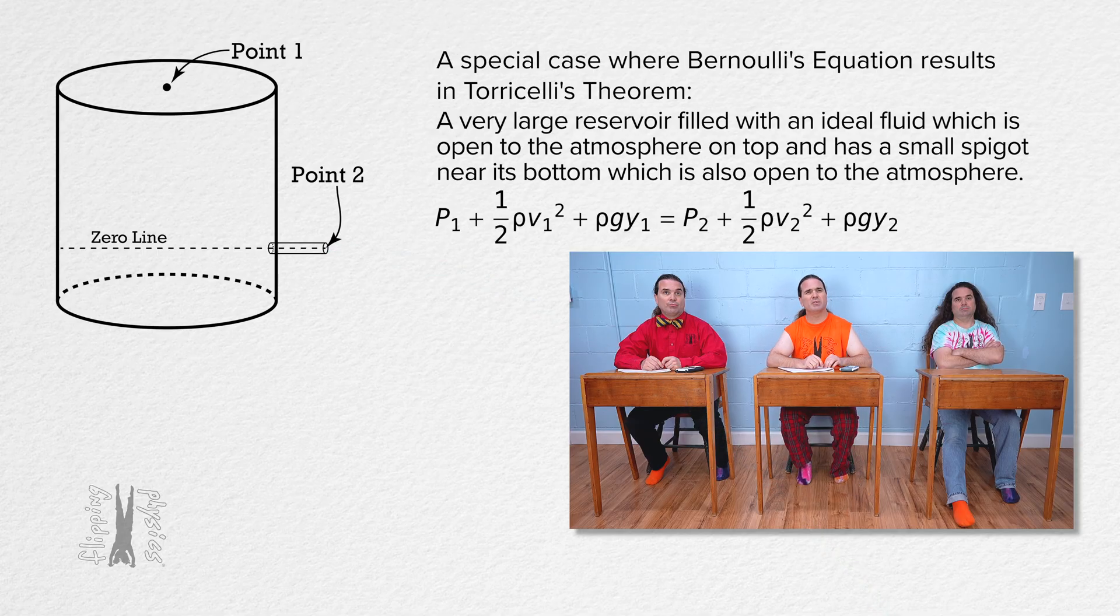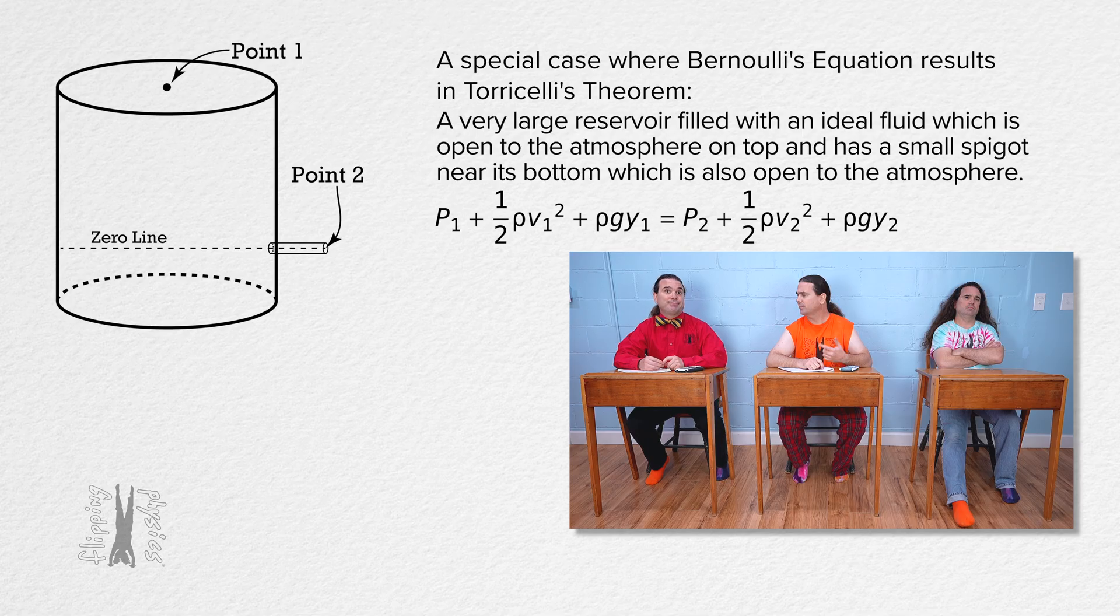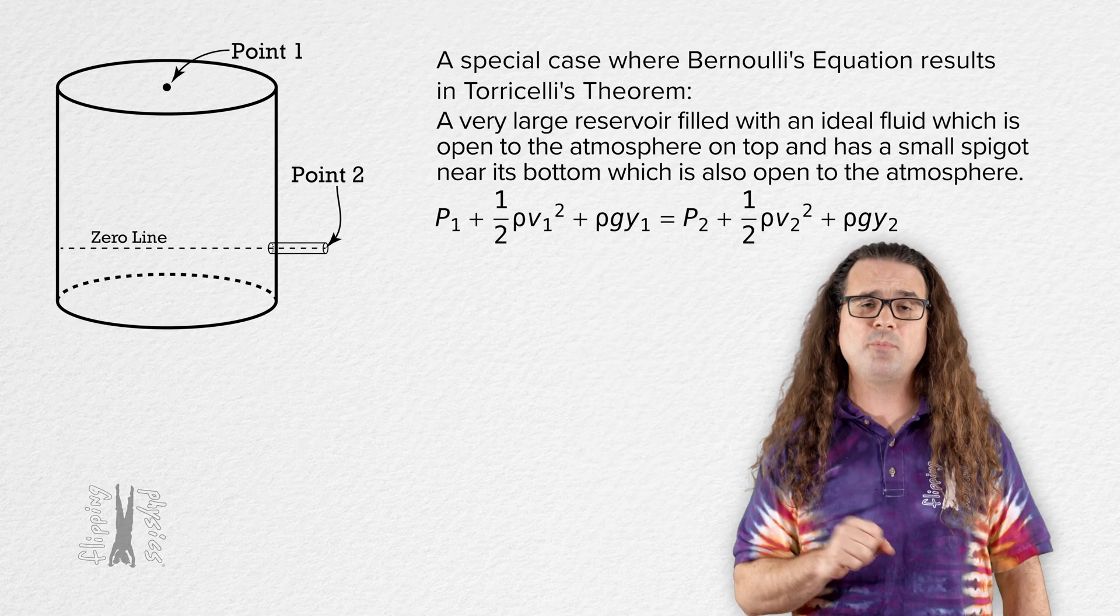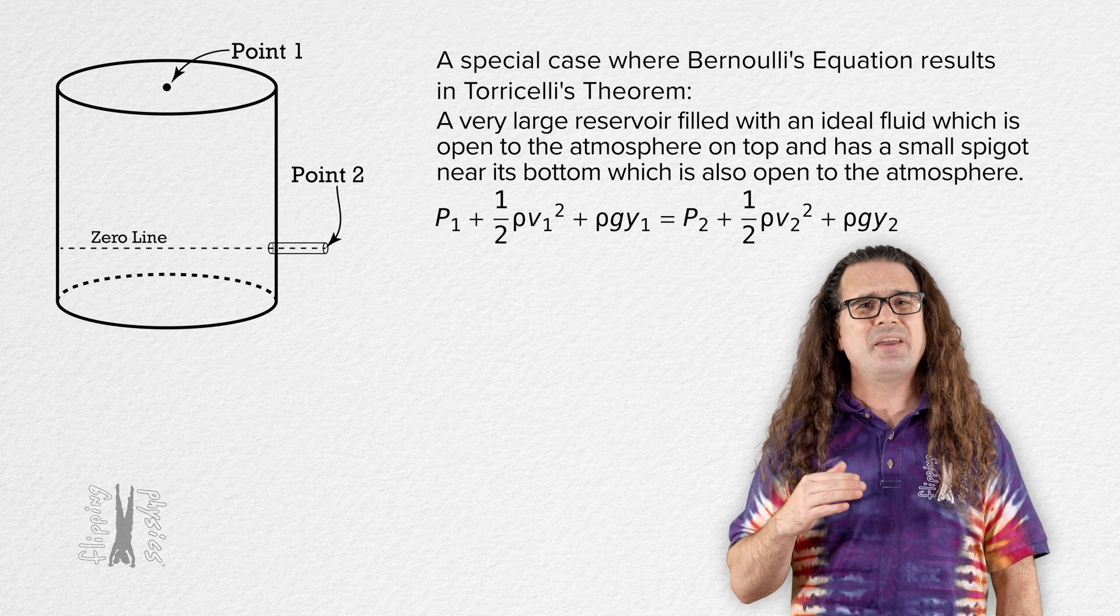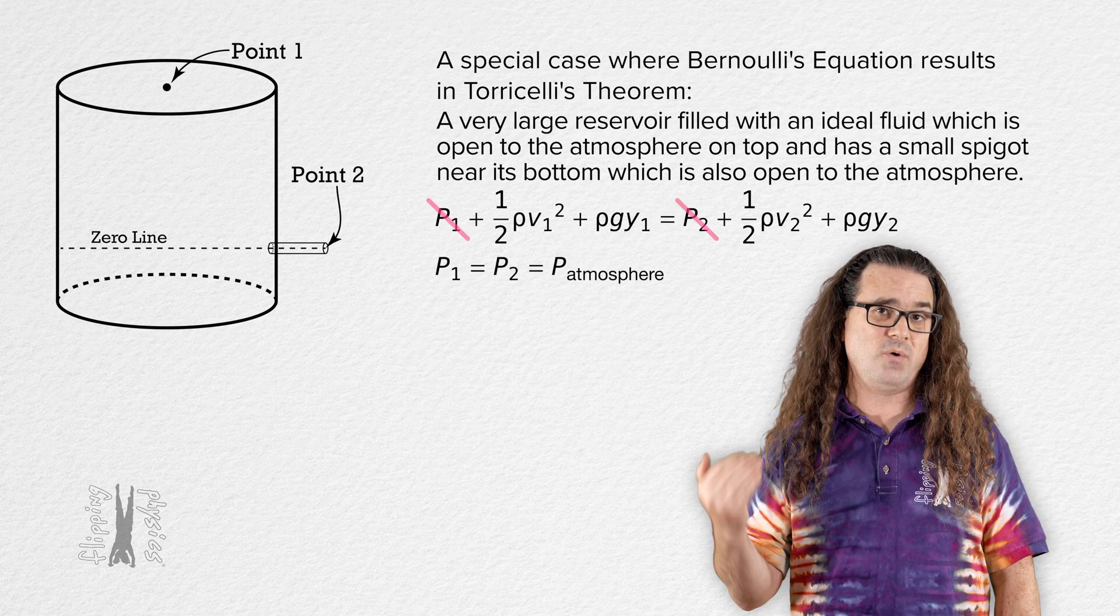How is that different from Bernoulli's principle again? The equation is called Bernoulli's equation and the relationship between fluid speed and fluid pressure is called Bernoulli's principle. Yeah, right. Thanks. You're welcome. Right. Now, realize because both points 1 and 2 are open to the atmosphere, they are both equal to the atmospheric pressure and cancel one another out in the equation.